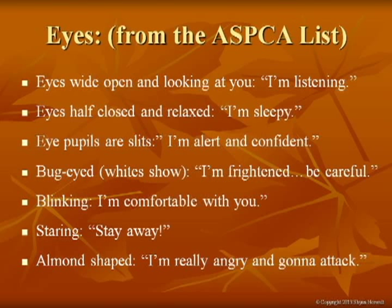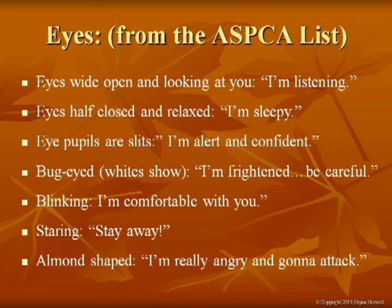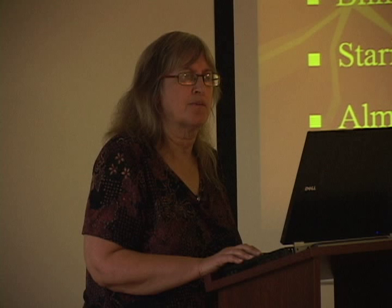From the ASPCA: if the eyes are wide open and the cat's looking at you, it's paying attention. Half closed and relaxed — sleepy. Pupils as slits — alert and confident. Bug-eyed or whites showing — frightened. Blinking — comfortable with you. If you have a nervous cat, consciously blink at it — that's how cats say to each other 'I'm not staring at you.' Staring means 'stay away, I threaten.' Almond-shaped eyes — really angry and about to attack. Note that some cats are naturally more round-eyed or almond-shaped, so you have to read the whole face.